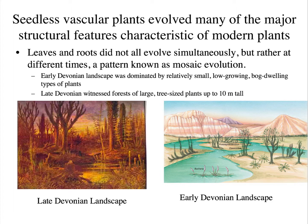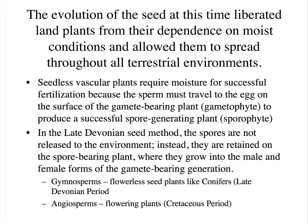The Early Devonian landscape was dominated by relatively small, low-growing, bog-dwelling plants — here's an early Devonian landscape with some Cooksonia. Then by late Devonian, the plants get bigger and more dense, reaching up to 10 meters tall, showing a definite rapid change in plant evolution.